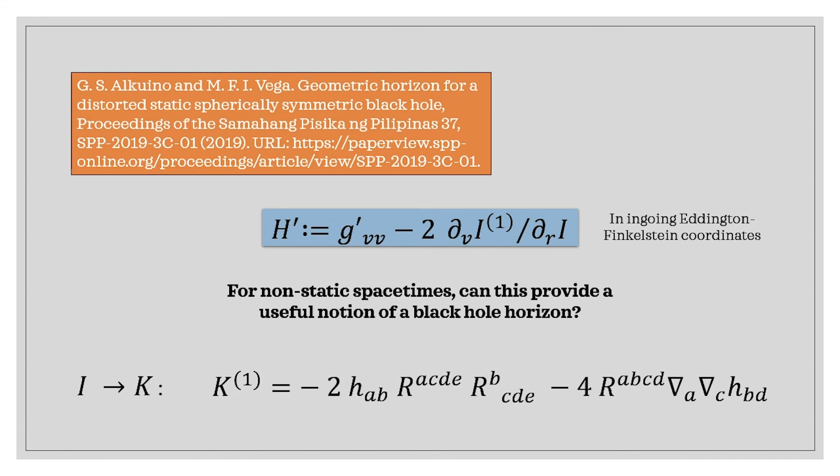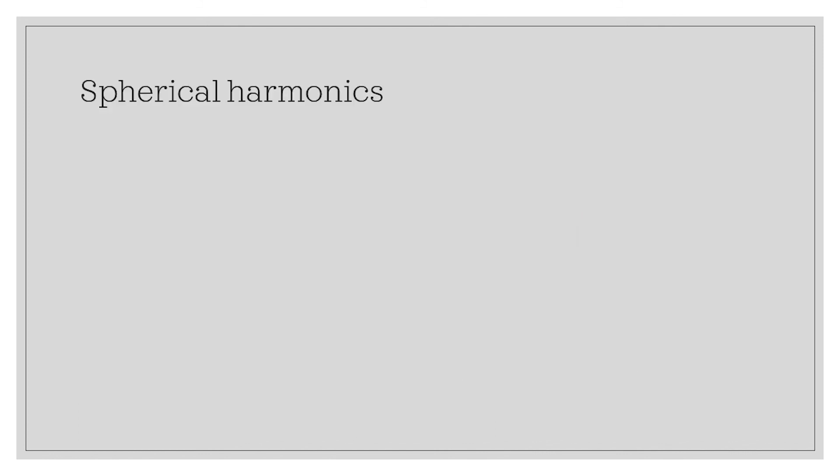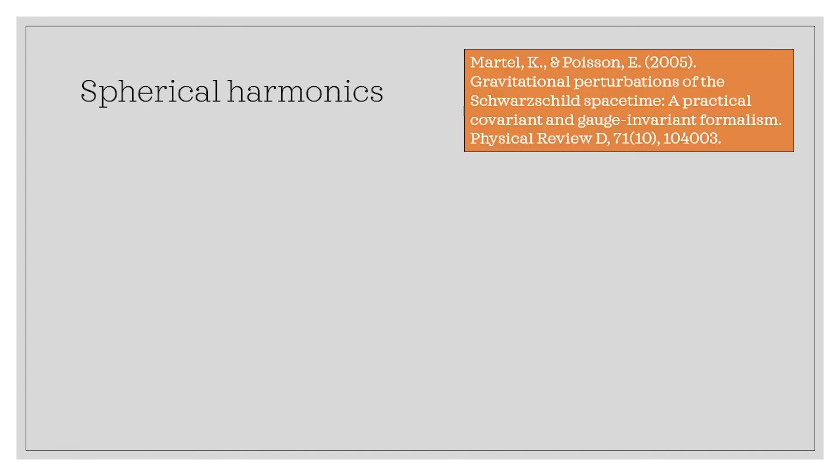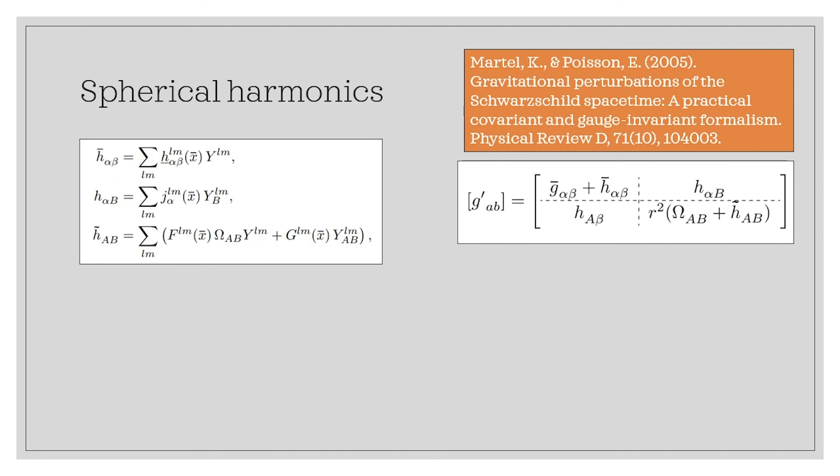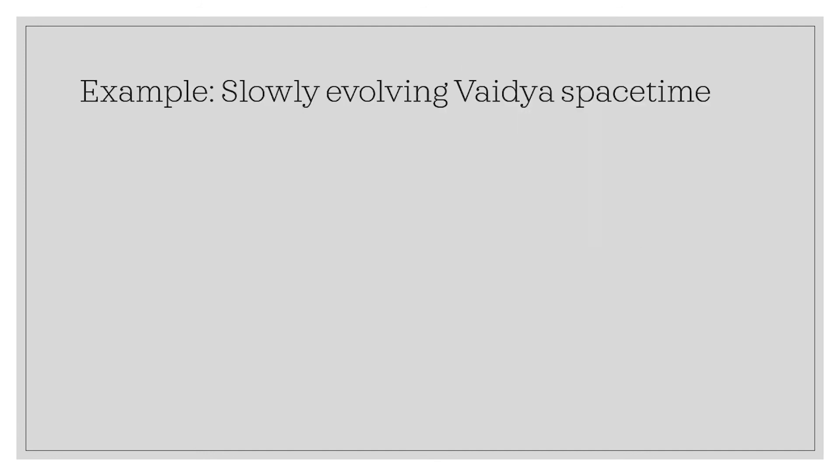We then considered the simplest non-vanishing scalar invariant, in this case the Kretschmann scalar, and we found that the first-order correction to the Kretschmann scalar is given by this equation. Then we applied the formalism of Martell and Poisson to express our result in terms of spherical harmonics.